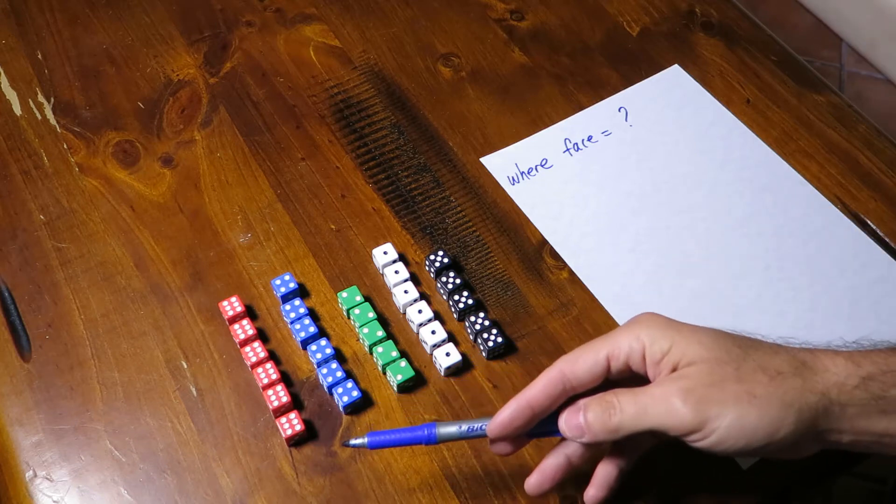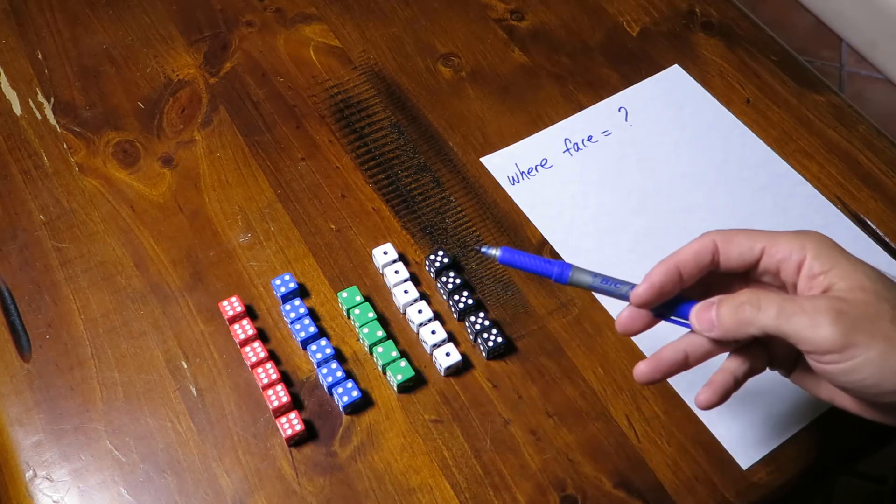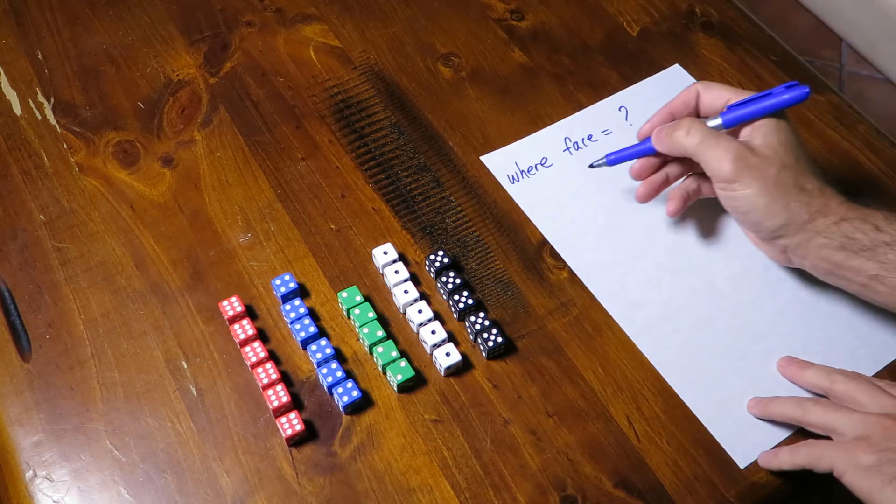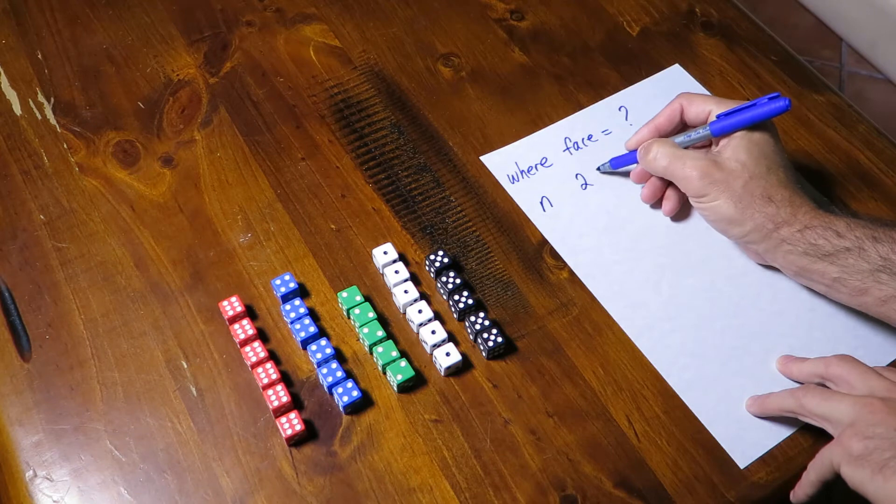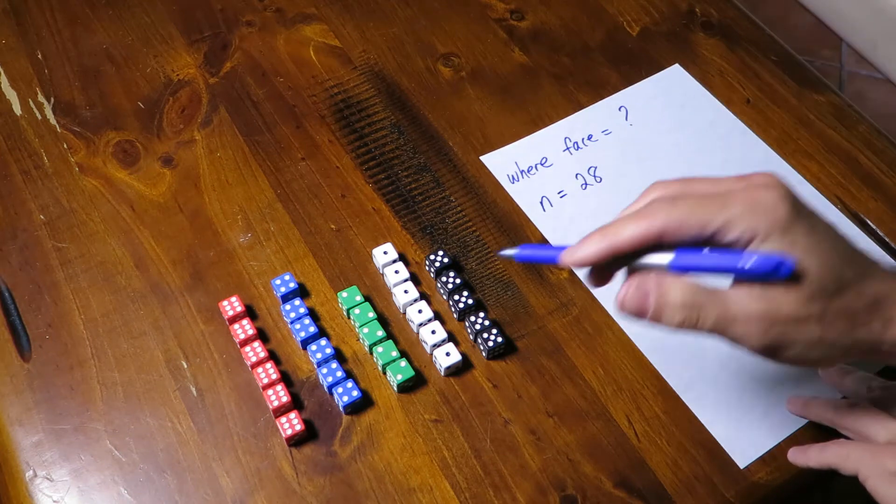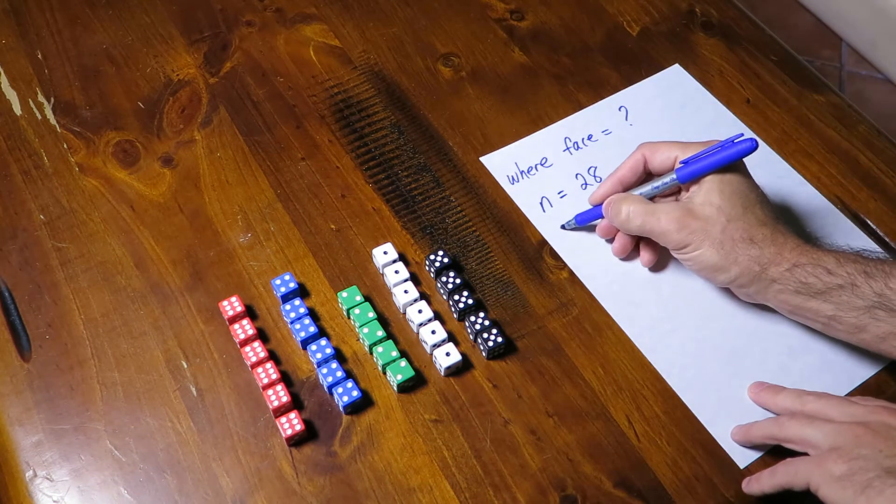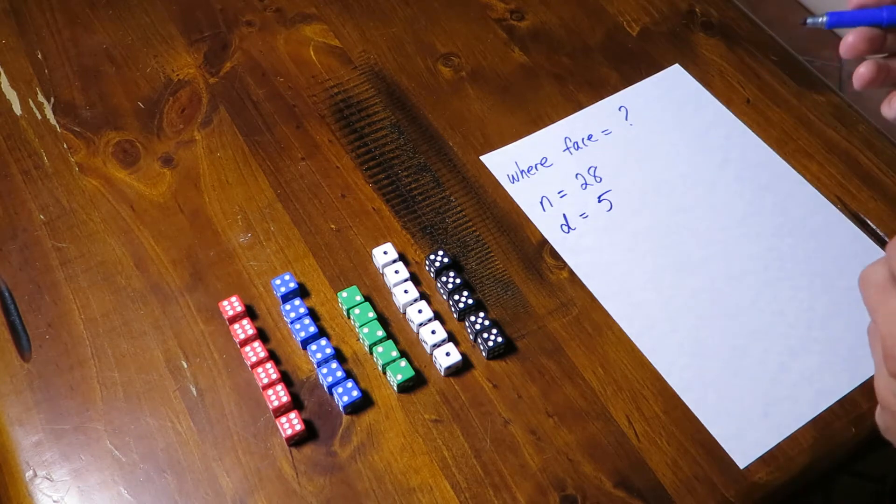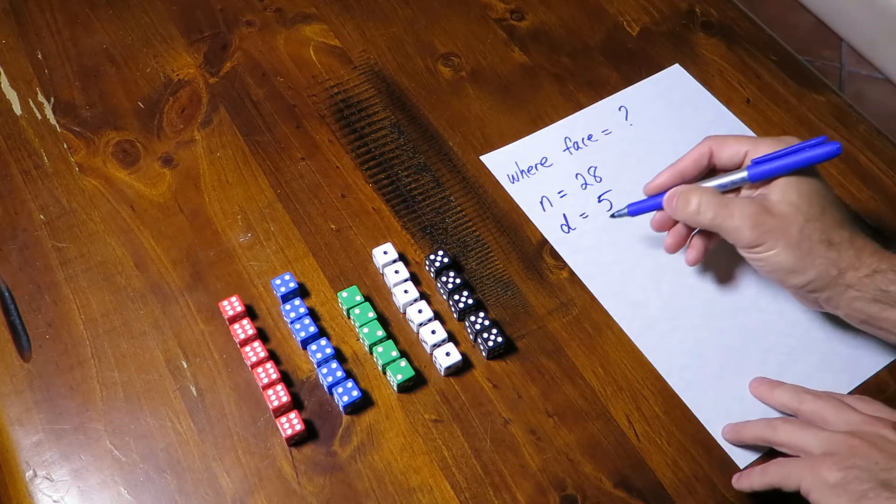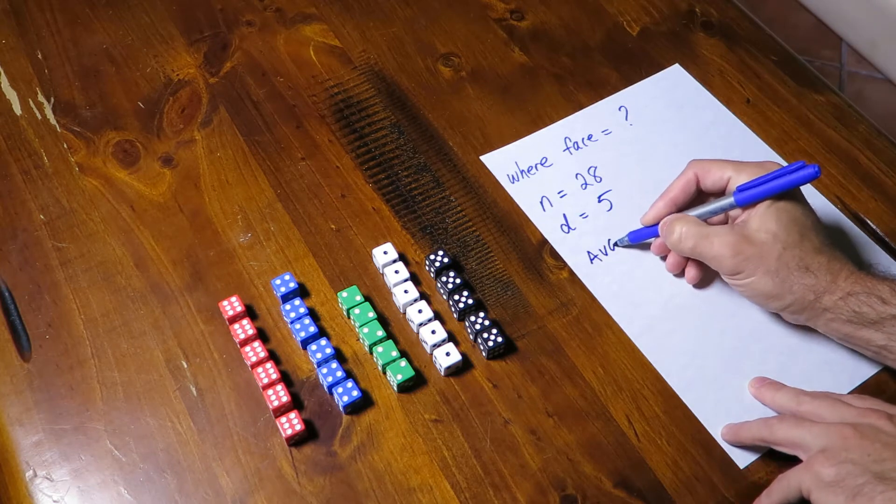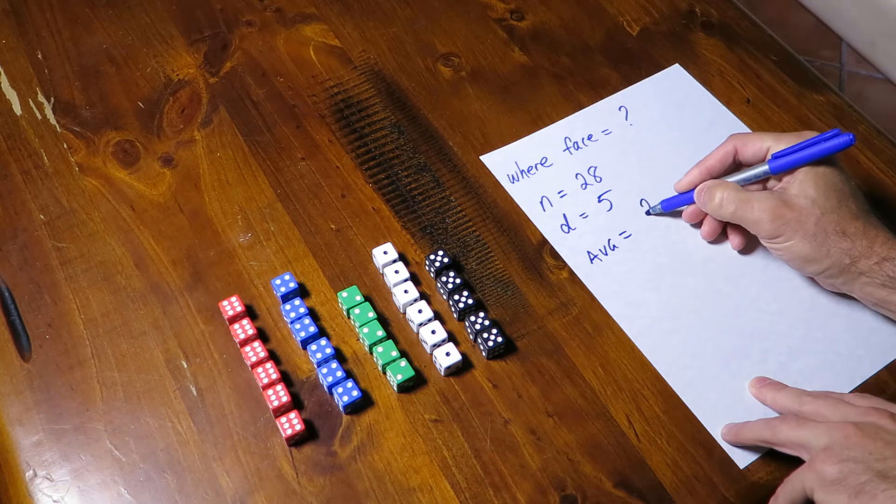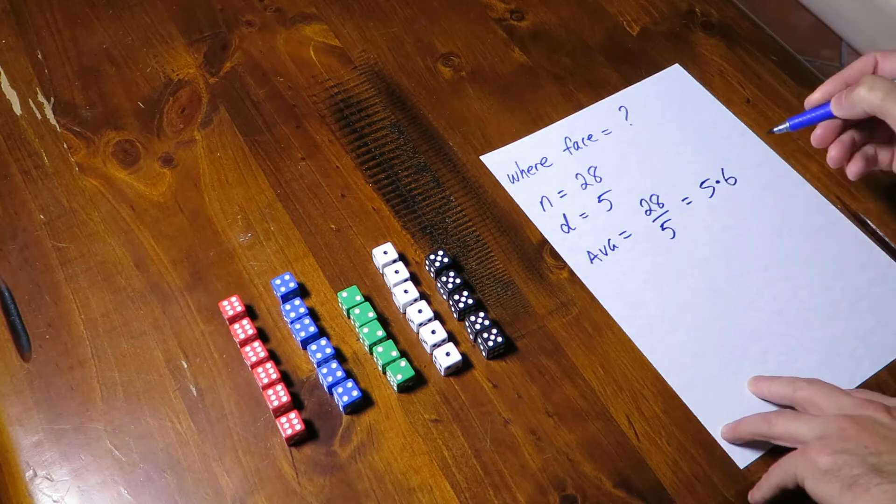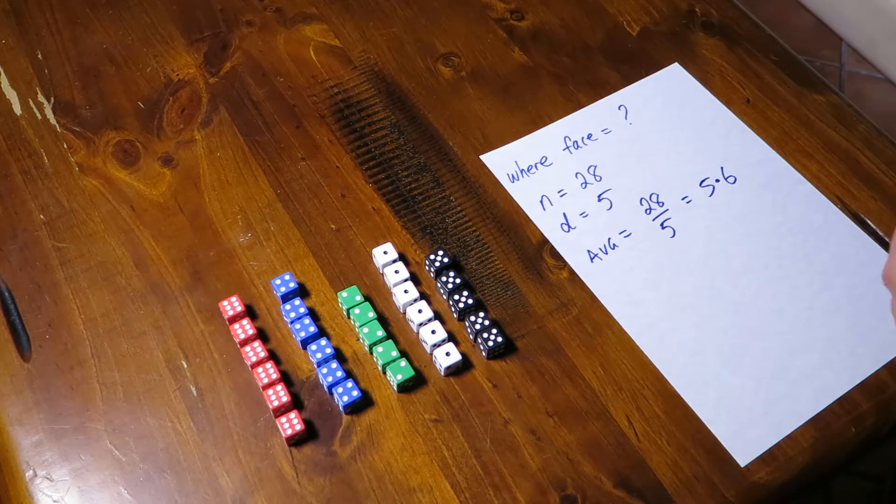So to answer that before histograms let's have a look at what we've got here. We've got six sixes, six fours, five twos, six ones, and five fives. So we've actually got 28 dice there. And how many distinct values do we have? We've actually got five distinct values. So the average number of dice per face number we would say is the average equals 28 divided by five and that's five point six. So about five dice per face.